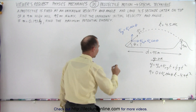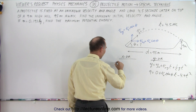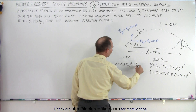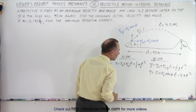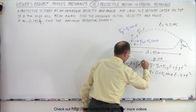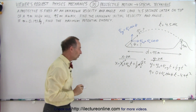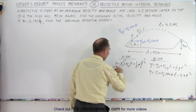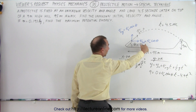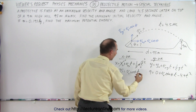Now let's do the same for the x direction. The equation of motion looks the same: x equals x-naught plus v-naught-x times time plus one-half a t squared. In projectile motion there is no acceleration in the x direction, so that term goes to zero, and x-naught is zero as well. The equation becomes 95 equals v-initial times cosine of theta times time.